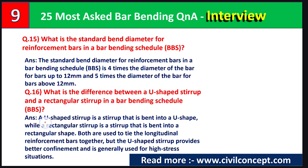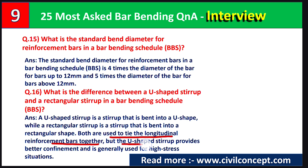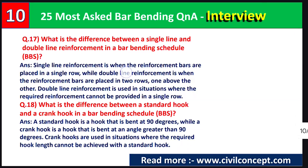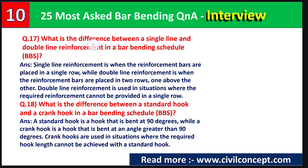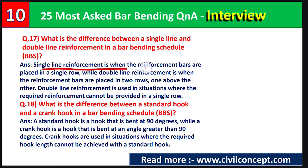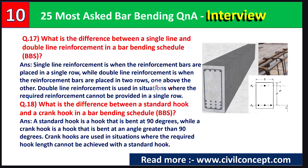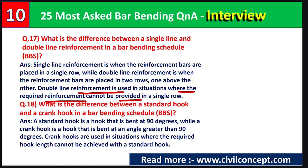Question number sixteen: what is the difference between U-shaped stirrups and rectangular stirrups in BBS? A U-shaped stirrup is bent into a U-shape, while a rectangular stirrup is bent into a rectangular shape. Both are used to tie the longitudinal reinforcement bars together, but U-shaped stirrups provide better confinement and are generally used for high-stress situations. Question number seventeen: single-line reinforcement has bars placed in a single row, while double-line reinforcement has bars placed in two rows — one above the other — used when required reinforcement cannot fit in a single row.